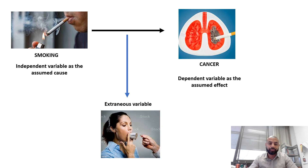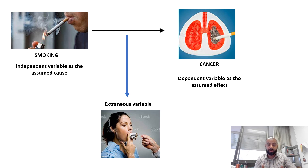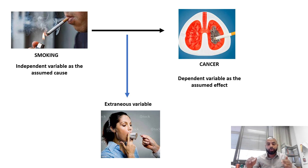Another extraneous variable is the extent of smoking — how many cigarettes a day. If one participant smokes only one cigarette a day and has cancer, while another smokes 100 or 200 cigarettes a day and also has cancer, how do you establish that relationship? Or consider the reverse: someone smokes one cigarette a day and gets cancer, while someone smoking 100 cigarettes a day does not. Is it the time period, the extent of smoking, or the age that explains the outcome?